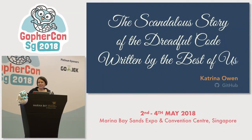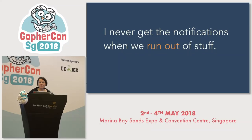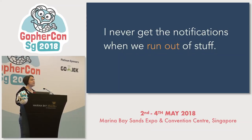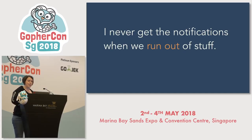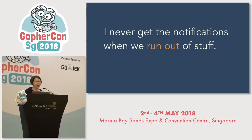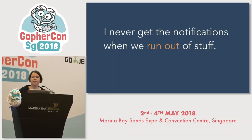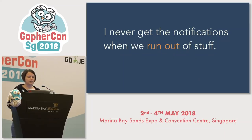We got this bug report. It said, I never get the notifications when we run out of stuff. It went on to explain that they were warned when running low on something, so they knew to make plans to replenish, but then when they tried to use the resource, sometimes they'd already be out. The context here is a game — an online multiplayer zombie apocalypse role-playing game — and running out of stuff is problematic.